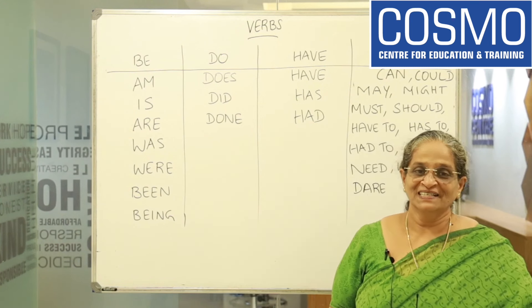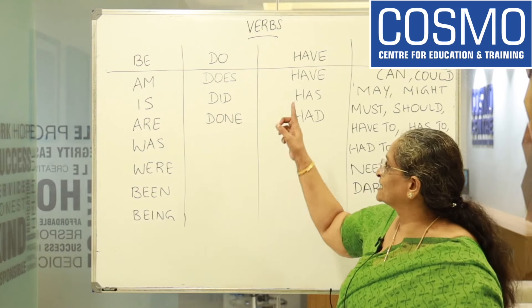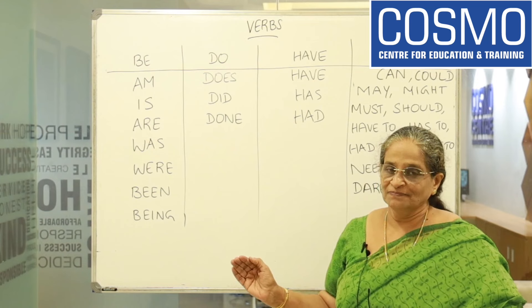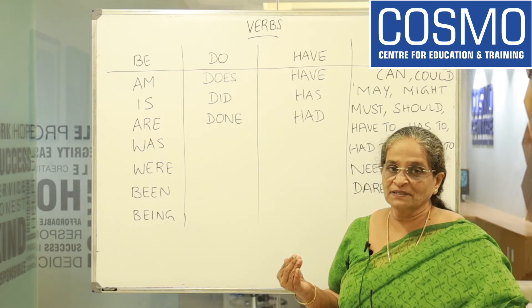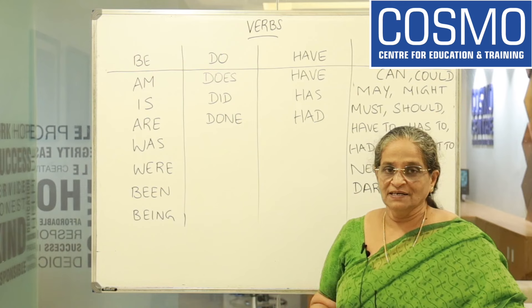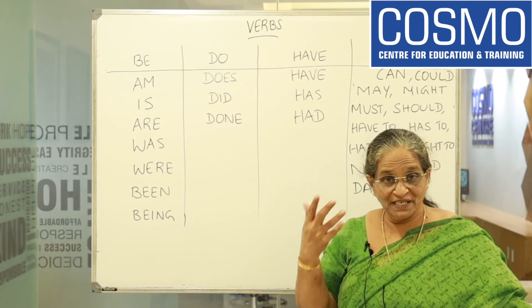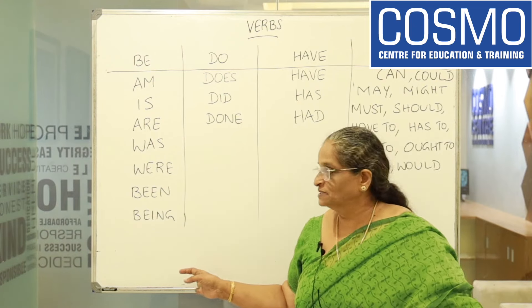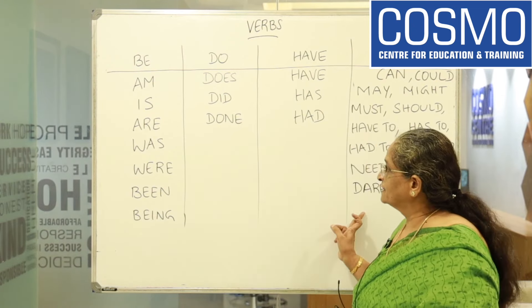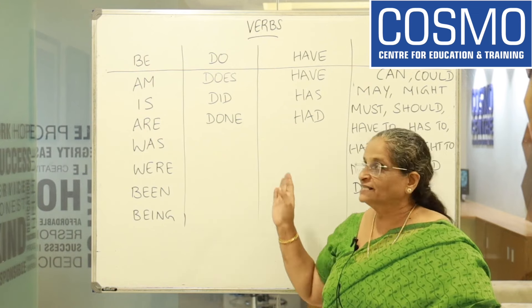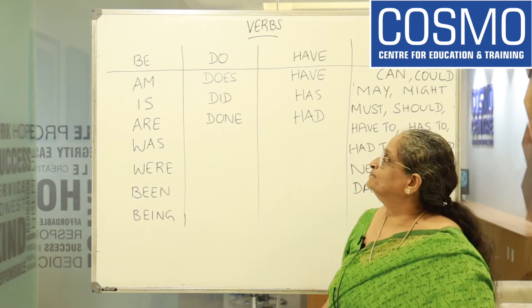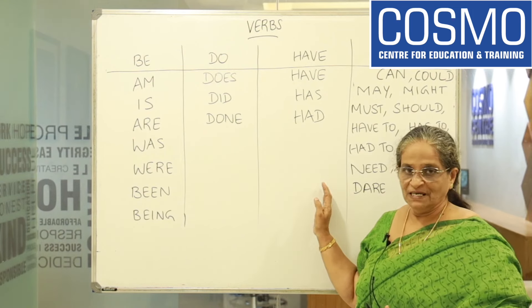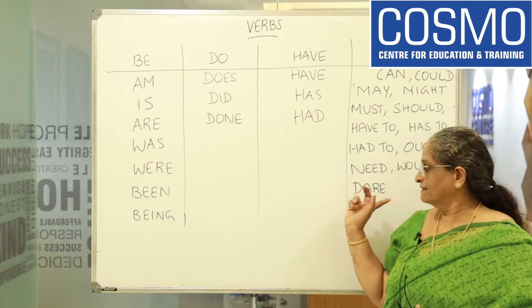Good morning all of you. Today, let's have a look at the different forms of the verbs. It will be easy for you. I will tell you what is the B form and what is the BE form — it is always confusing. Now, let's have a look at the four divisions: the BE form, the DO form, the third one is HAVE. These are the primary auxiliaries, and this is the modals.